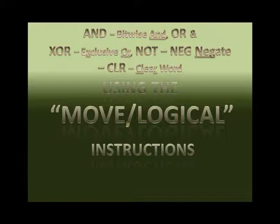The OR instruction will put a 1 in the destination bit position if either one of the two bit positions of the other two words are 1. Whereas the Exclusive OR will set the destination to 1 if either one of the two sources are 1, but not both of them. If they're both 1, because it's exclusively OR, it will not set the destination to 1.